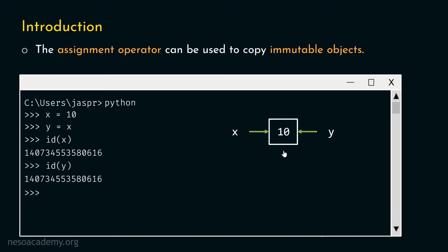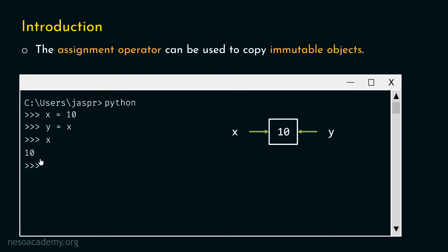Let's see the value of x and the value of y. We type x and hit enter — we get 10. And the value of y — we type y and hit enter — we get 10. This seems like we have created a copy of x. Now, before moving forward, I would like to mention what is the meaning of creating a copy. y is 10 and x is 10.